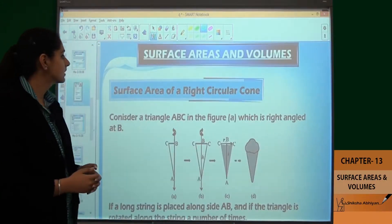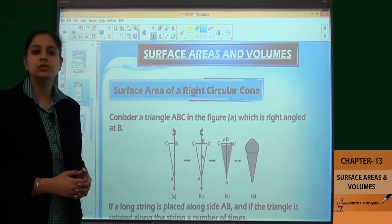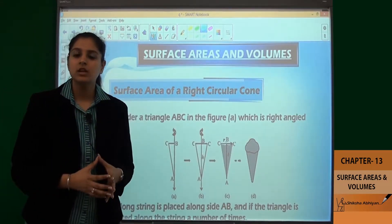Now, the next topic is the surface area of right circular cone. This is the right circular cylinder.